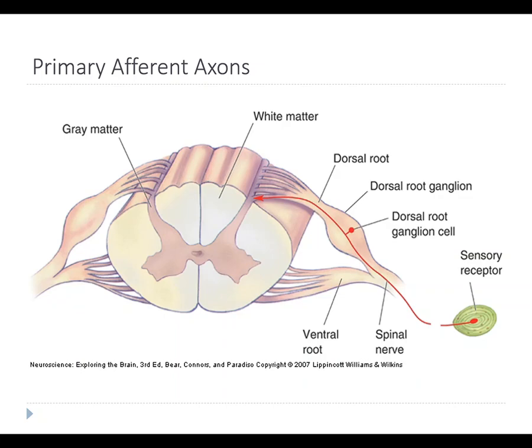The axons that bring touch information from the skin back to the central nervous system are called primary afferent axons. The word 'afferent' is a general term meaning something coming into the brain or spinal cord from outside — essentially a sensory receptor. In this case, we're specifically talking about the touch receptors from the skin.